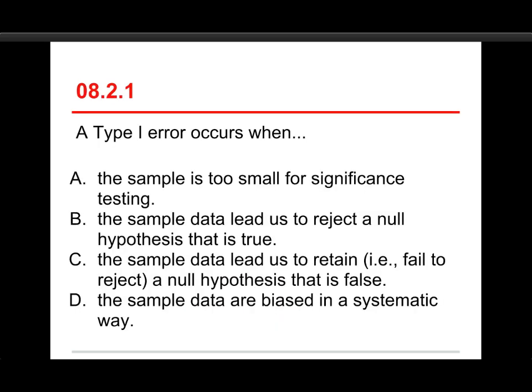The first question in this quiz is, a type 1 error occurs when A, the sample is too small for significance testing, B, the sample data lead us to reject a null hypothesis that is true, C, the sample data lead us to retain, that is, fail to reject, a null hypothesis that is false, or D, the sample data are biased in a systematic way.